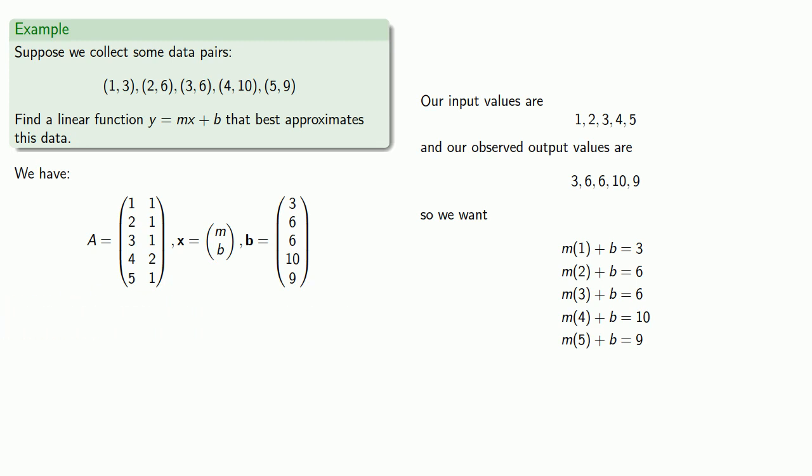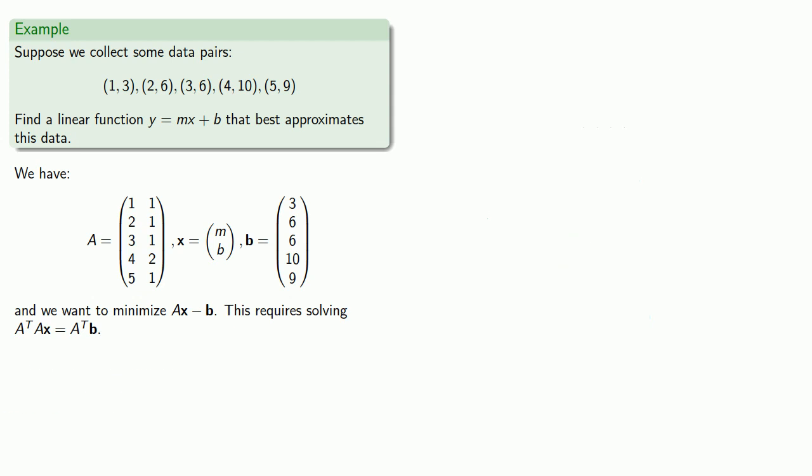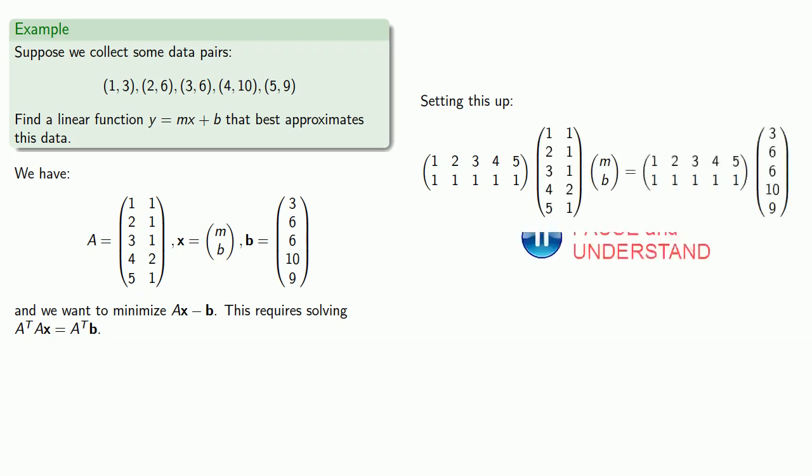And our goal is to minimize ||Ax - b||, and this requires solving A^T Ax = A^T b. So setting this up, we want A^T Ax to be A^T b. And cleaning up all those matrix calculations.